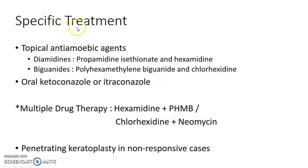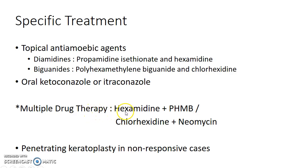Now let us see the specific treatment of Acanthamoeba keratitis. Topical anti-amoebic agents like diamidines can be given, including propamidine isethionate and hexamidine. Biguanides can also be given, such as polyhexamethylene biguanide and chlorhexidine. Oral ketoconazole or itraconazole can also be given. Multiple drug therapy is usually given for many months. The drugs commonly used are hexamidine plus polyhexamethylene biguanide, and chlorhexidine plus neomycin. Penetrating keratoplasty can be done in non-responsive cases. Thank you.